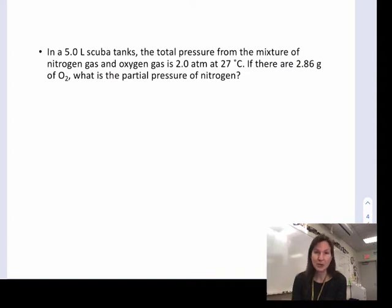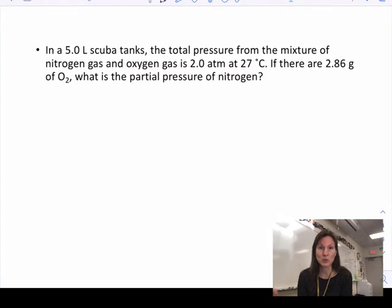A place partial pressure is used a lot is for scuba tanks. Within scuba tanks you have not a hundred percent oxygen because you don't normally breathe a hundred percent oxygen. If I had a tank that was a five liter scuba tank and the pressure was two atmospheres and the temperature of the tank is 27 degrees Celsius, the question is if I know 2.86 grams of oxygen are in the tank, how much of the pressure of two atmospheres is nitrogen?